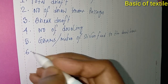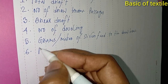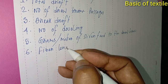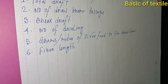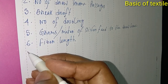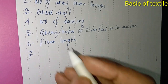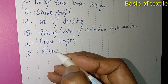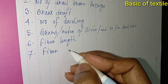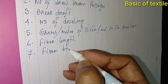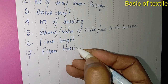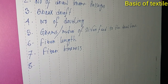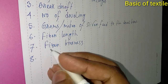Number seven: fiber fineness. Number eight: delivery speed.